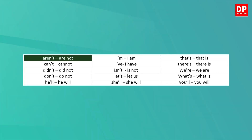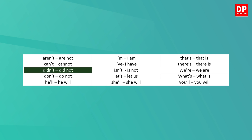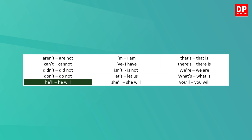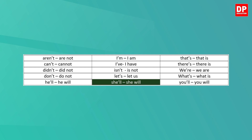Let's now look at the most popular contractions. Aren't — are not. Can't — cannot. Didn't — did not. Don't — do not. He'll — he will. I'm — I am. I've — I have. Isn't — is not. Let's — let us. She'll — she will. That's — that is.